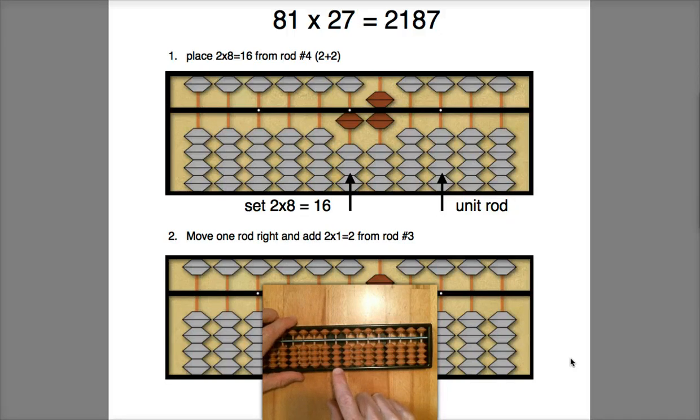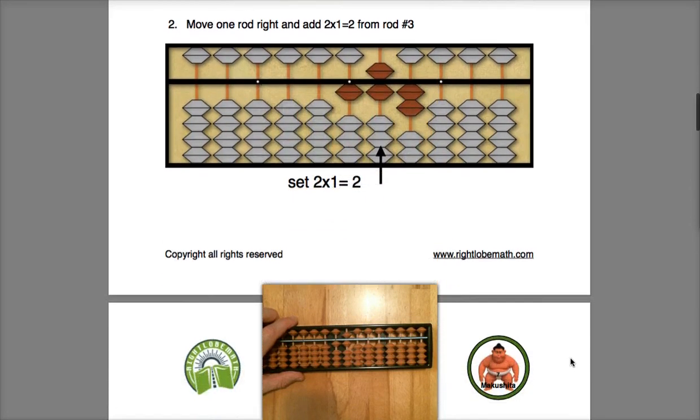I take the first multiplier digit 2 and multiply it by the first multiplicand digit 8. So 2 times 8 is 16, so I enter 16 like that, and that's pretty straightforward.